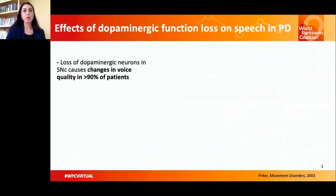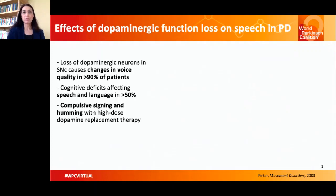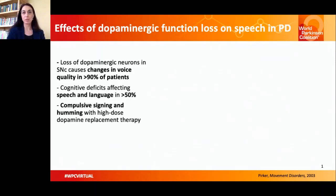As we all know well, loss of dopaminergic neurons in substantia nigra is a hallmark of Parkinson's disease. It also leads to changes in voice quality in more than 90 percent of patients. Moreover, cognitive deficits affecting speech and language are developed with the progression of disease in more than 50 percent of patients, and compulsive singing and humming have been described with high dose replacement therapy.